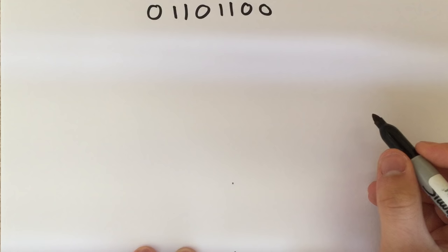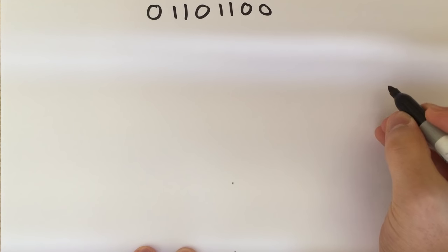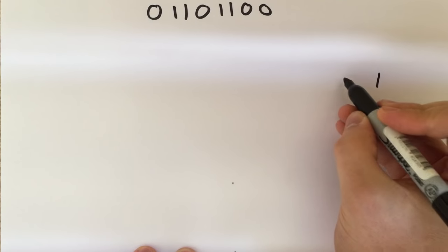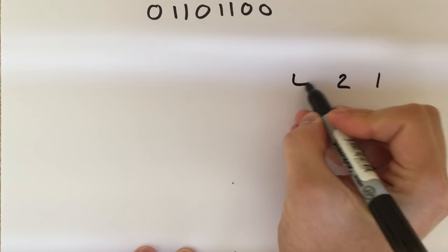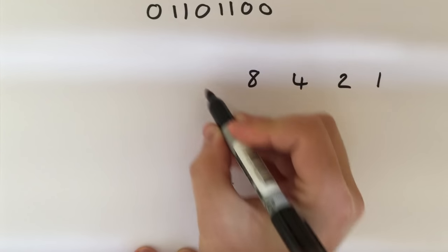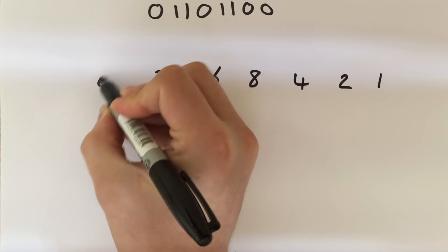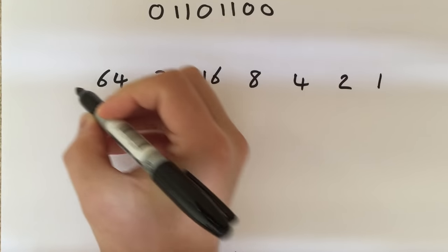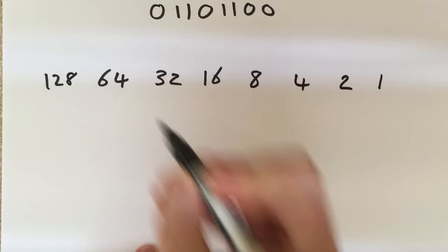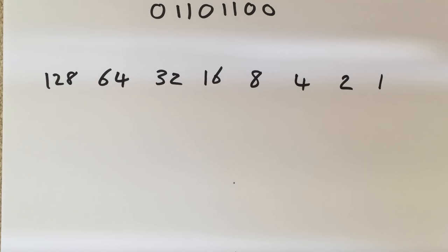To convert this 8-bit binary number into denary, we're first going to need to draw a little table to help us out. The table is easy to remember because it always starts at 1, and the only step you need to remember is to double as we go up. So double 1 is 2, double 2 is 4, double 4 is 8, double 8 is 16, double 16 is 32, double 32 is 64, and double 64 is 128.